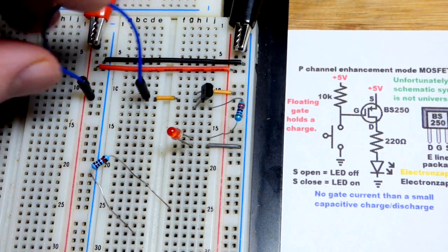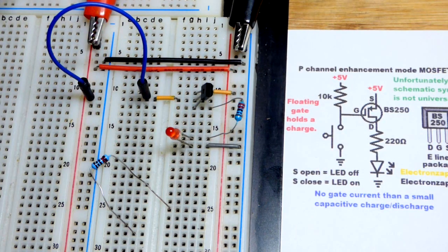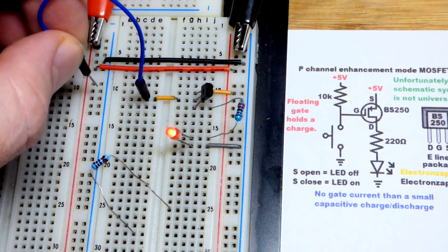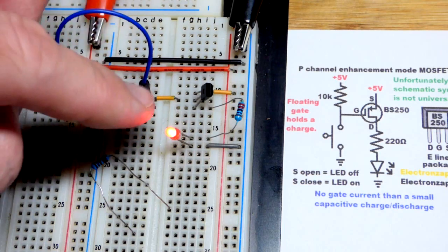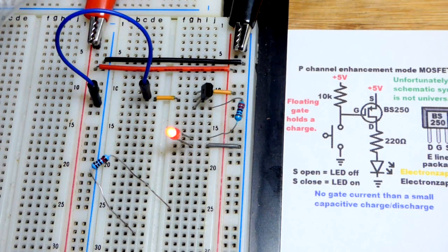So now we can put this directly to the positive supply. No current goes in or out of the gate. It just builds up a charge right there. And so now it's floating. But then we go to the negative charge. Now it's on fully. The LED is on fully.